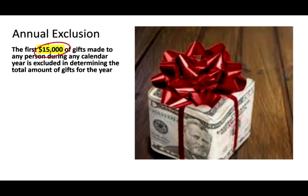I'm doing this recording in the spring of 2020, so this number might change if you're watching this in 2021, 2022, or 2025. The annual exclusion changes on a regular basis due to inflation and other factors. The first $15,000 of gifts made to any person during a calendar year is excluded in determining the total amount of the gift for the year. Simply put, I can give every person $15,000 and I don't have to worry about the gift tax.